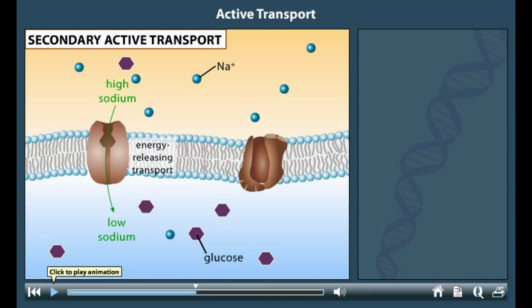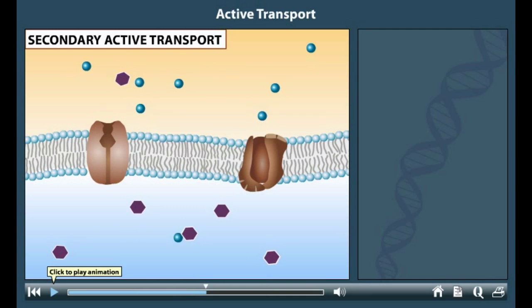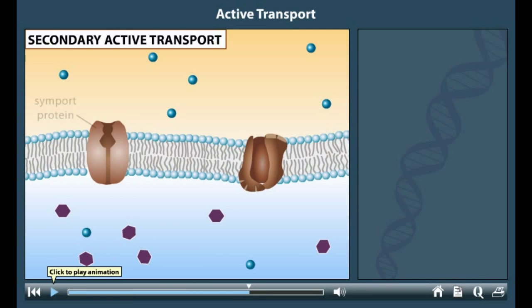To pump glucose against its concentration gradient, the pump takes up both sodium and glucose from outside of the cell and then changes shape, depositing both substances inside the cell. A pump that transports two substances in the same direction is called a symport protein.